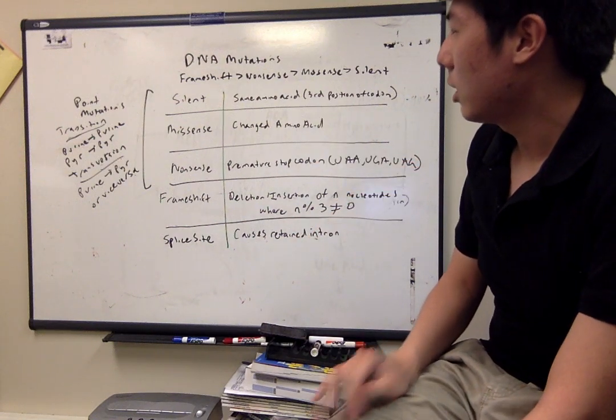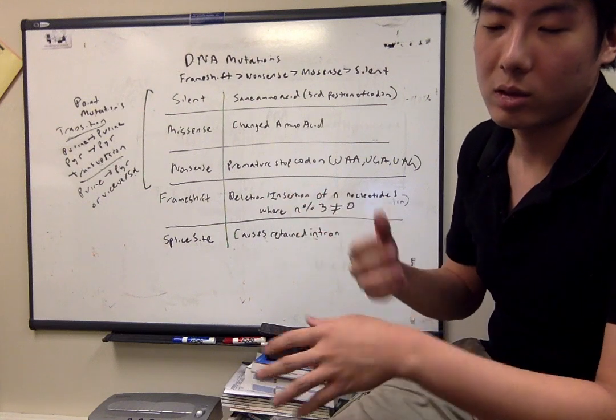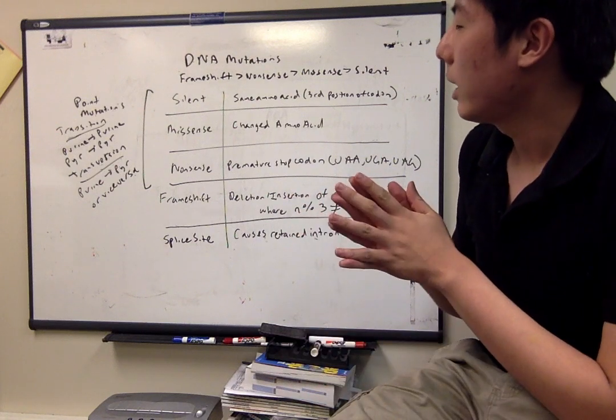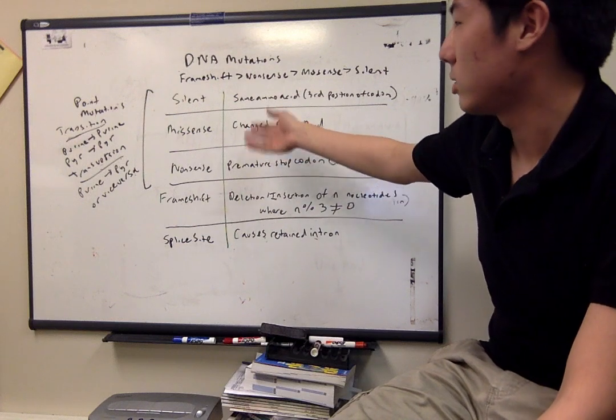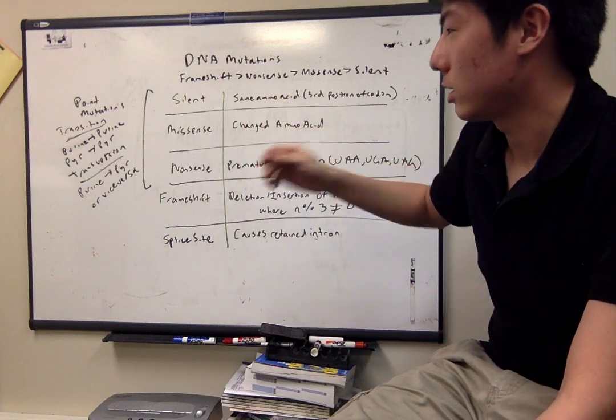A point mutation can be defined as a single nucleotide substitution, and those encompass the first three that we're going to talk about: silent, missense, and nonsense mutations.